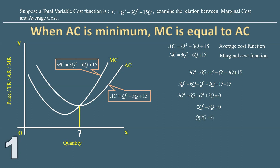Solving this quadratic equation for q gives two values: q = 0 and q = 3/2. Output cannot be zero, so we reject the value zero. When output is 3/2, average cost is minimum.